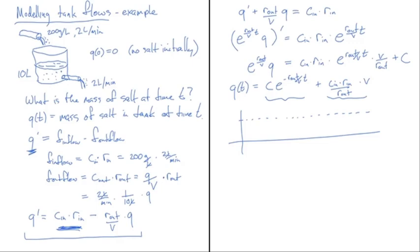I haven't found C yet, but my initial condition says no salt initially, so q(0) = 0. That forces a specific value of C so that q starts at zero and then undergoes exponential decay up to the asymptote. In the previous example, there was exponential decay to zero because c_in was zero, so the constant term wasn't there.